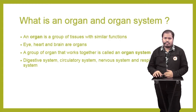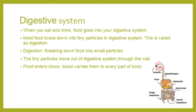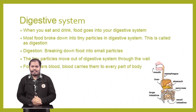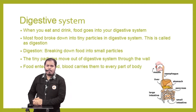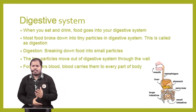The first is the digestive system — the most important system in the body. It digests the food and drink you consume; most of it will be broken into tiny particles. This process is called digestion. The term digestion means breaking down food into small particles.